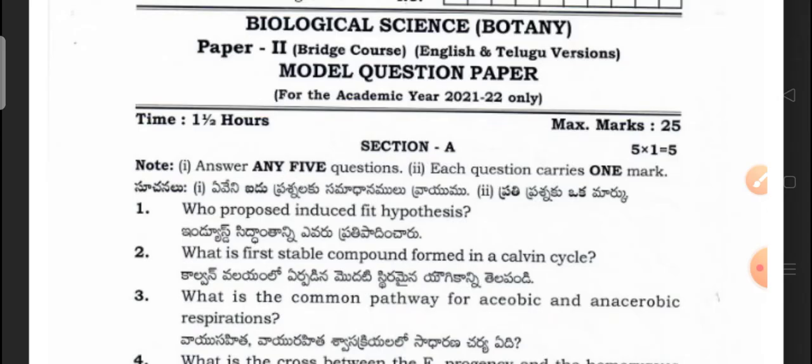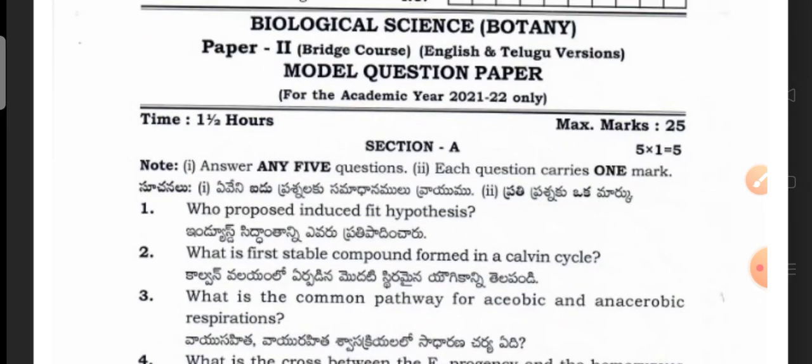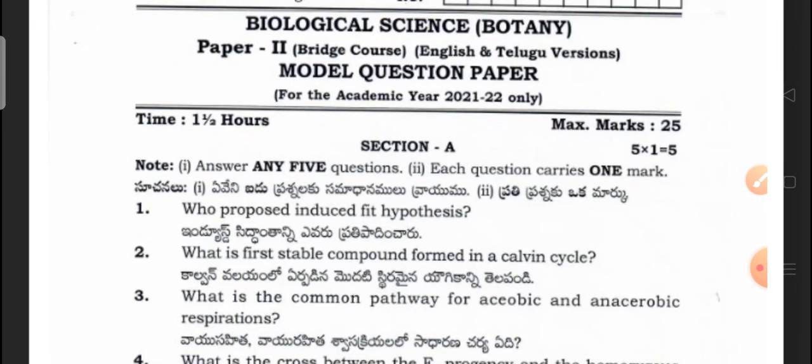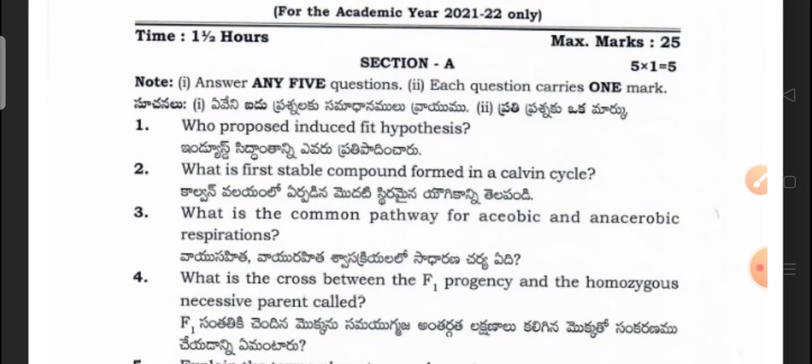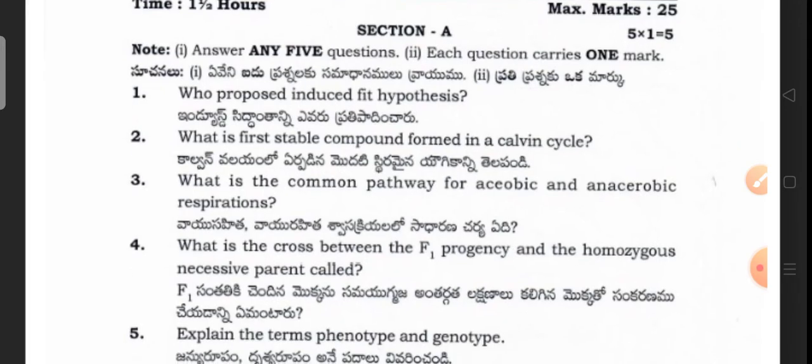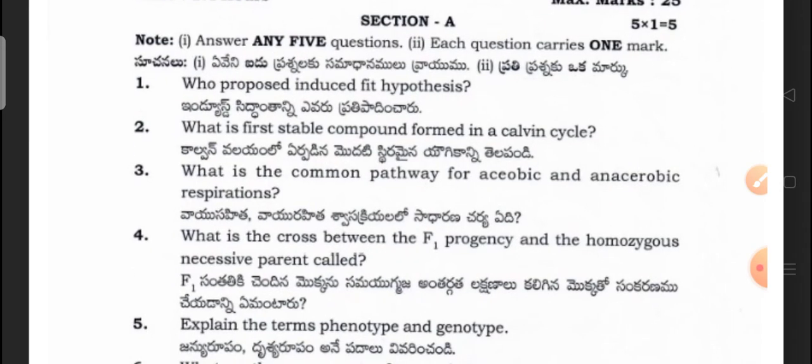Without wasting time, let me go through them one by one. Biological science botany question paper, Section A. In Section A you don't have any choice — out of 5 questions you have to write.